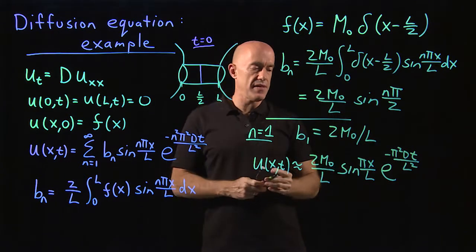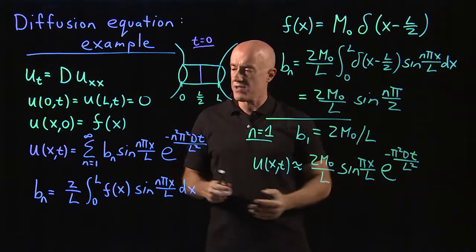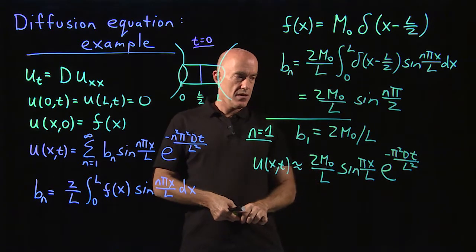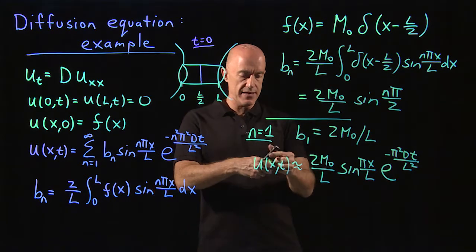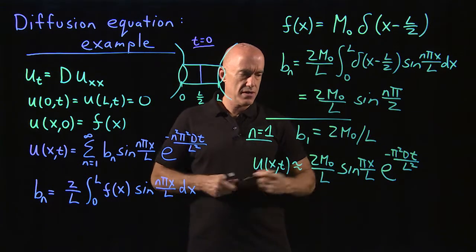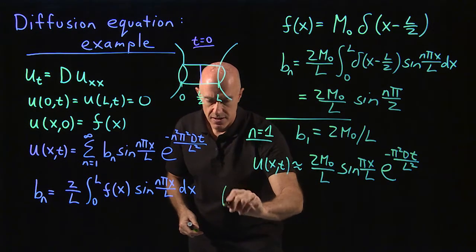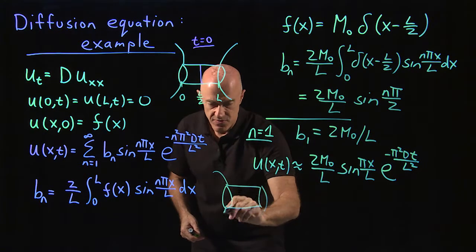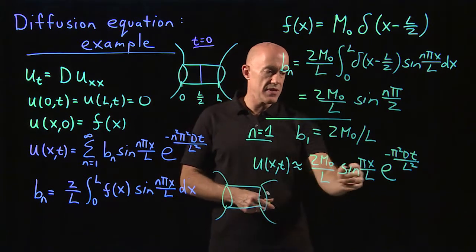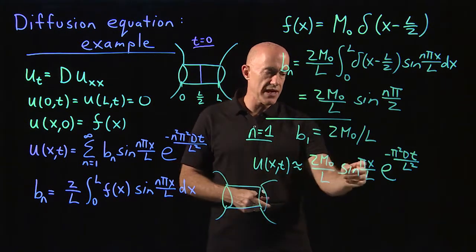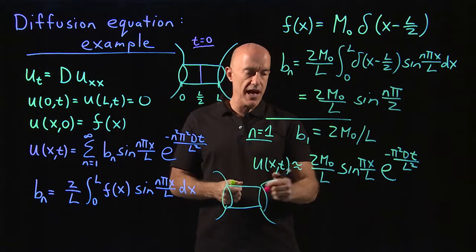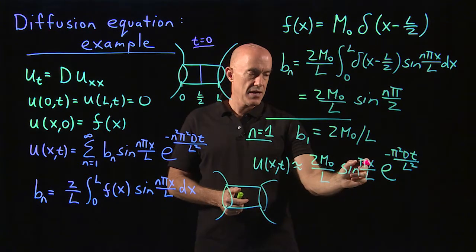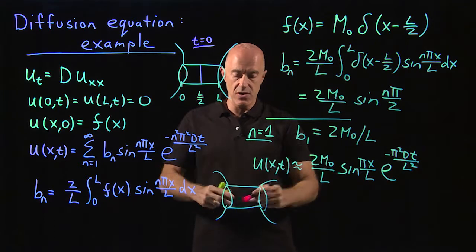And that will be the solution for large enough times when we can neglect all the higher order terms in n. So what does that look like? If we draw a picture, rather crude picture, if I draw the pipe here with the reservoir, the distribution of the dye looks like sine pi X over L. So the sine function has a peak at L over two and zero on the ends.